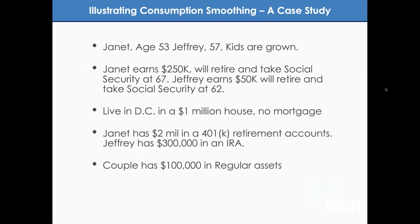Here's the case study: a couple — Janet, age 53, and Jeffrey, 57. Their kids are out of the household. Janet earns $250,000 a year and plans to retire and take Social Security at 67. Jeff earns $50,000 and plans to retire and take Social Security at 62. They live in DC in a million-dollar house with no mortgage. Janet has a $2 million 401(k) retirement account, Jeff has a $300,000 IRA, and the couple has $100,000 in regular assets.